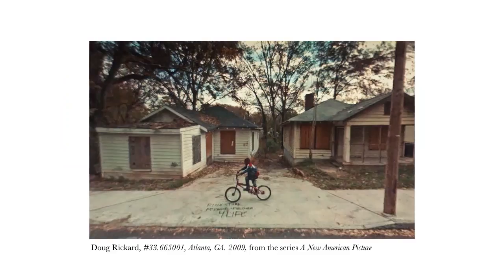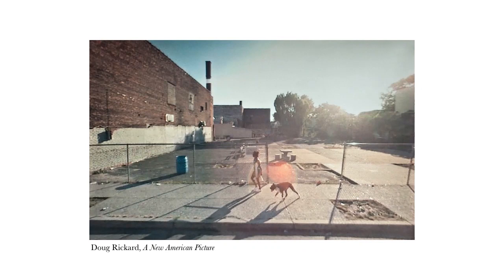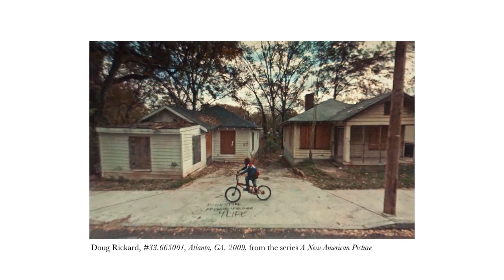A very different approach to capturing the everyday is Doug Rickard, who used Google Street View and YouTube to find images which he then re-photographed on his computer monitor. This image is from Google Street View where he has the coordinates of the street view — he's not actually present there, but present at the computer screen, finding these moments where Google Street View is showing these people and moments in time.